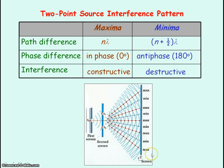This interference pattern is not only true for light but is true for any two coherent sources of waves — for example, microwaves, sound waves, and water waves all show a similar interference pattern of maxima and minima.